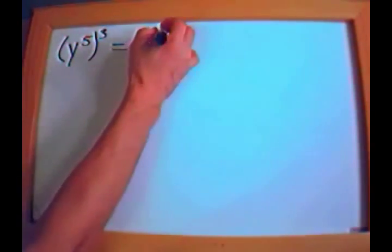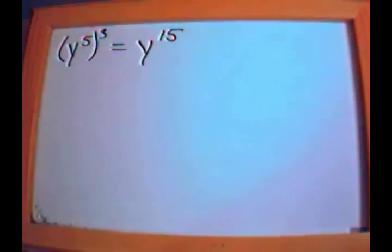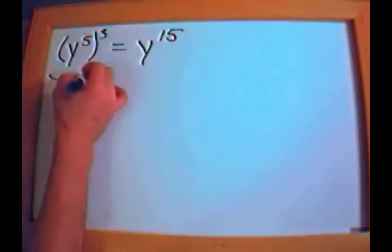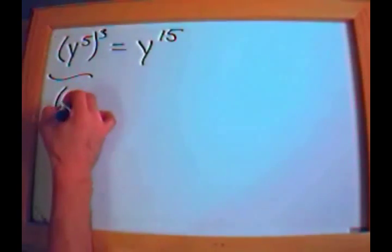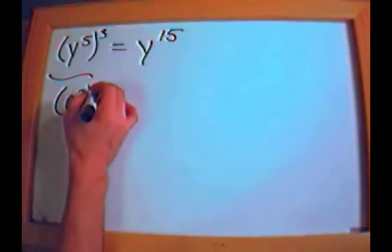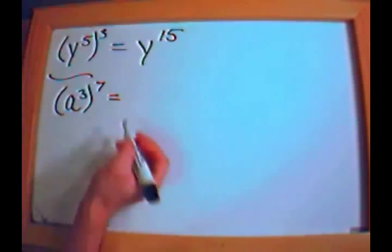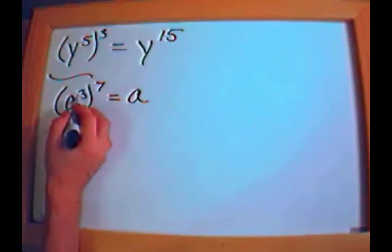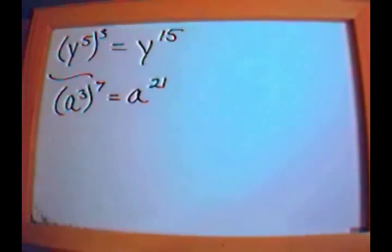Let's apply the shortcut. If I have y to the fifth raised to the third power, I just write y down and multiply the exponents: 5 times 3 is 15, so the answer is y to the fifteenth. What if I have a to the third raised to the seventh power? Write a down, and 7 times 3 is 21, so the answer is a to the twenty-first.